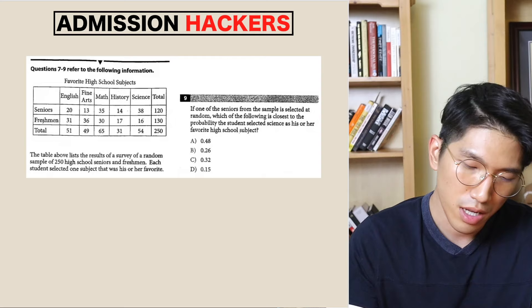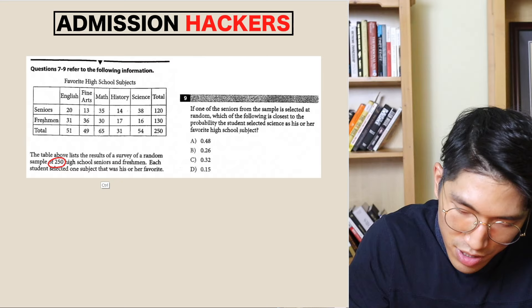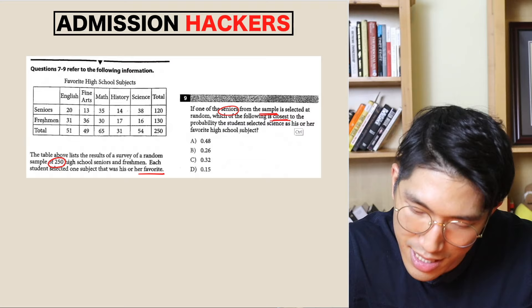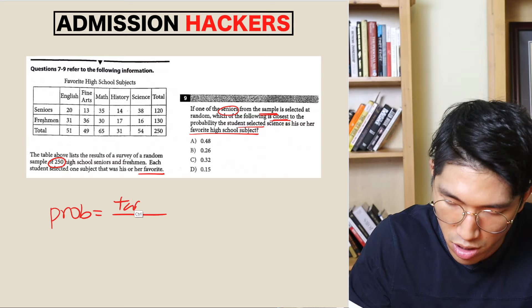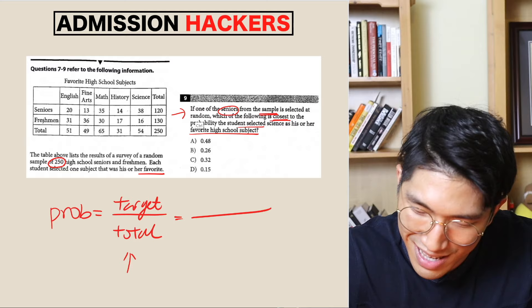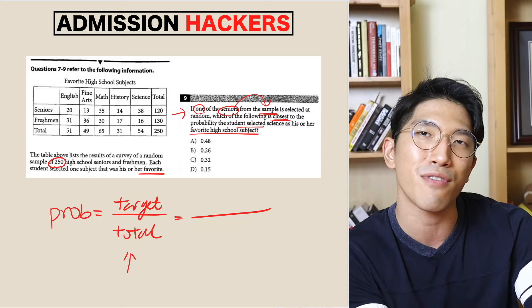So let's look at this question. The question says the table above lists the results of a survey of a random sample of 250 high school seniors and freshmen. Each student selected one subject that was his or her favorite. The question says if one senior from the sample is selected at random, which of the following is closest to the probability that the student selected science as his or her favorite high school subject? Remember, probability is literally just target over total. You always want to start off by identifying your total first. Since we're picking a student from all of the seniors — not from every single student — your total is going to be made up of seniors only, which is 120.